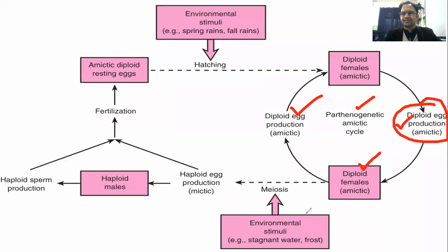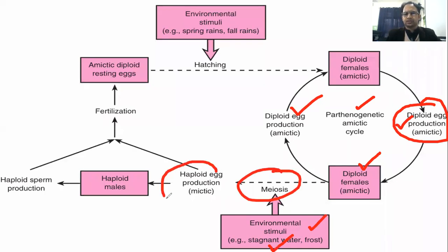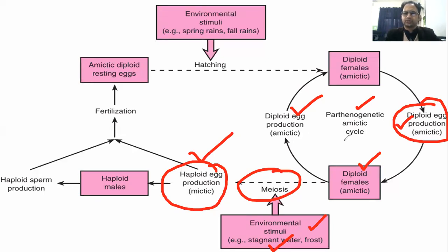They again have diploid eggs, and this cycle continues. If some of the diploid females are triggered by environmental stimuli such as cold or drought, they can also undergo mictic production and haploid eggs can be produced. The haploid egg represents the mictic, or sexual, phase of the life cycle.